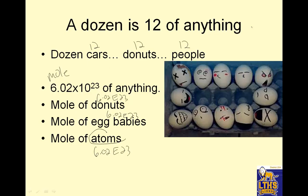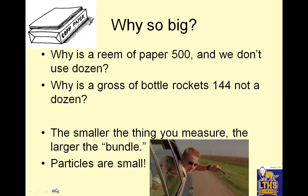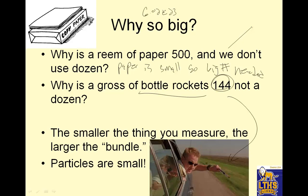So why is 6.02 E23 such a big number? Why is a ream of paper 500 and we don't use a dozen? Because paper is small. Why is the gross of bottle rockets 144 and not a dozen? Because bottle rockets are small and we need a bigger number because we use a lot of them. The smaller the thing you measure, the larger the bundle. Particles are small. This is shooting a bottle rocket out of a car. Don't do that because sometimes it doesn't light and it explodes in your hand and your ear.